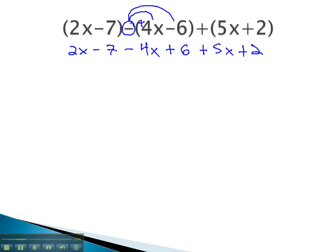Now, all that's left is to combine like terms on the resulting expression. We have 2x, take 4x away, and add 5x to that gives us 3x.